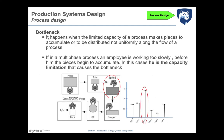A bottleneck occurs when a resource — machinery, materials, or human resources — limits the execution of the process and causes pieces to accumulate or be distributed non-uniformly along the flow. For example, if operator 3 takes more time to execute their operation than others, they are the bottleneck. This causes products to accumulate in front of them and limits throughput for downstream operations. If more resources are present in each phase, we can identify the bottleneck within each job or operation.